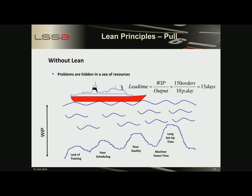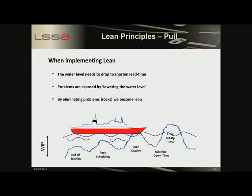In most companies, problems in the organization are hidden by a great amount of work in progress. If we cannot guarantee first-time right, machine uptime, or quick product changeovers, this will lead to big inventories. In the example, with 150 customer orders in the system and an output of 10 orders a day, the lead time is on average 15 days per order. When we start implementing lean, we reduce inventory levels — in the example, the water level is lowered until we hit a problem. After eliminating these problems, we become more and more lean, lead time is reduced, customers are more satisfied, and costs are less because we eliminated waste.